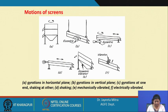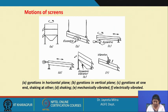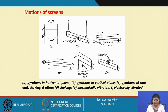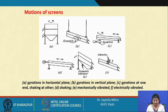The motion of a screen can be of many types: A — gyration in a horizontal plane; B — gyration in a vertical plane; C — eccentric gyration, with gyration at one end and shaking at the other; D — shaking only; E — mechanically vibrated screen; and F — electrically vibrated screen. All are different arrangements that can be used based on product requirements or efficiency. Inclination, gyration, and shaking all help in proper screening and prevent clogging of the mesh.